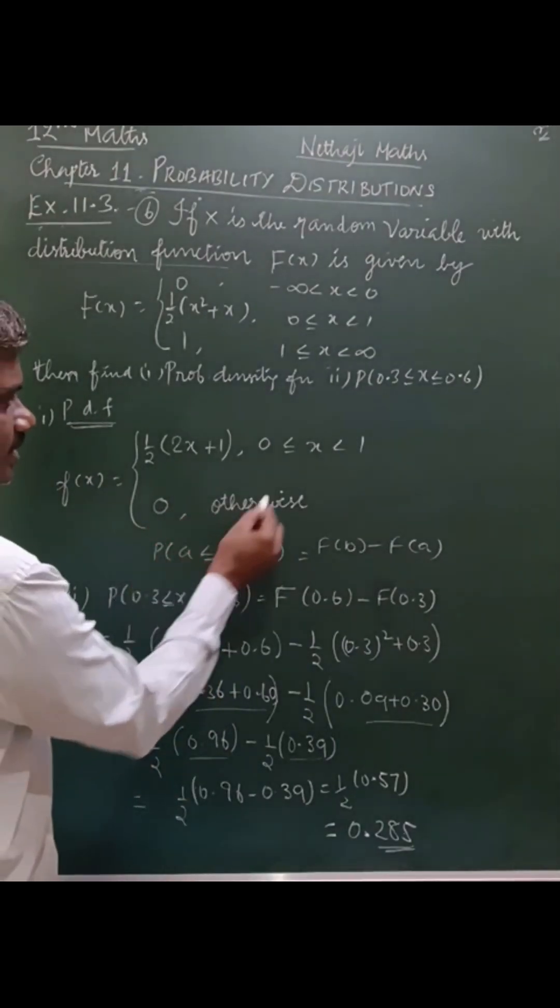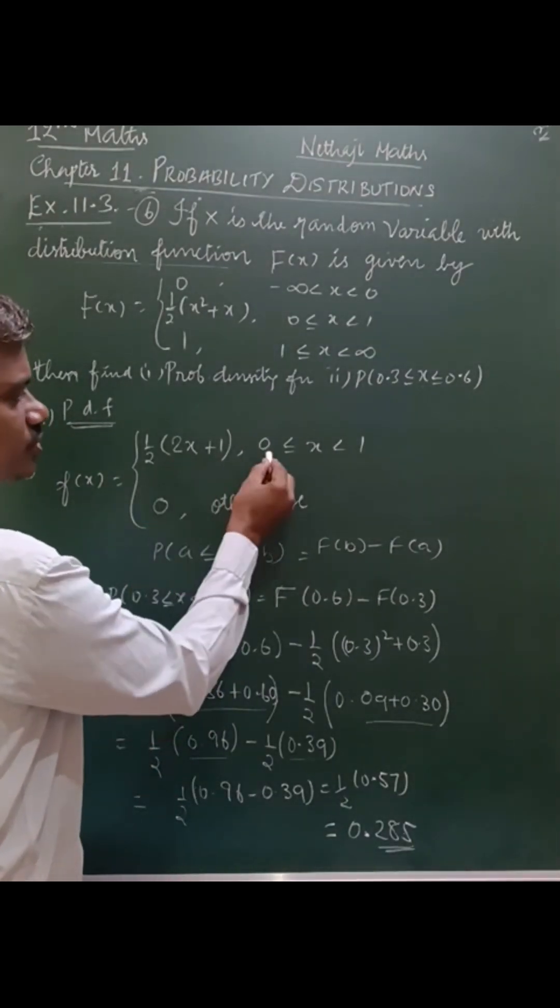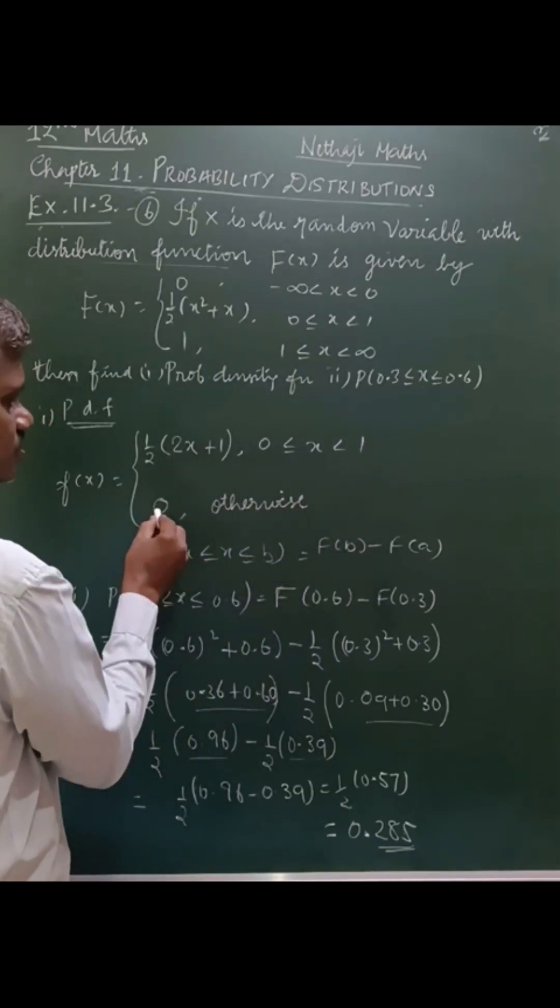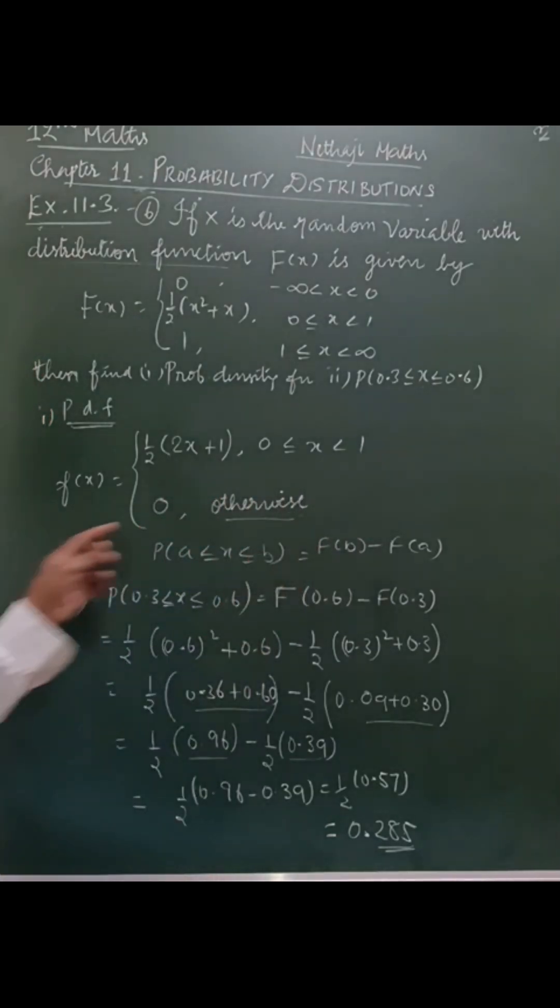Here you can see the function is defined for 0 to 1, so the probability is defined in that limit. Otherwise it would be 0. That's all. Thank you.